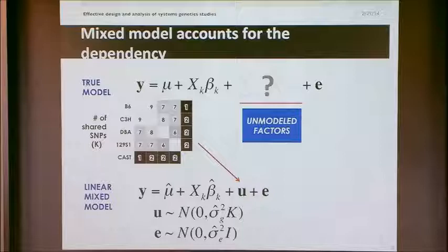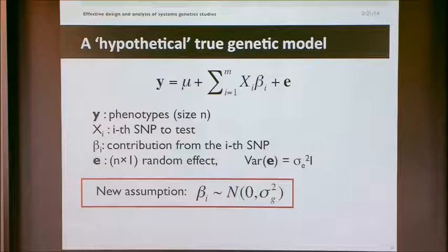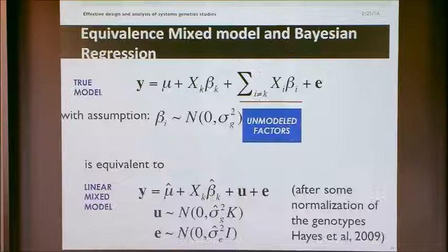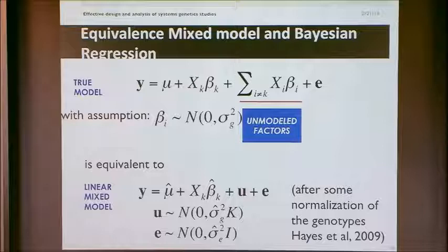The key idea behind our work is that we extend the simple model to include a random effect term that captures these unmodeled factors. These unmodeled factors will have a covariance structure dependent on how much of the genome is shared between individuals. Using a likelihood model, we fit the data to estimate and correct for this — that's the idea behind linear mixed models. If we go back to our hypothetical true model and assume that the beta_i's are drawn from a normal distribution with mean zero and variance sigma squared G, then using a linear mixed model and Bayesian regression under those assumptions are equivalent.